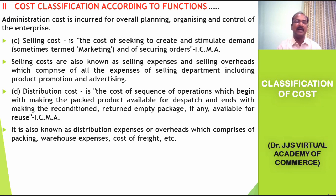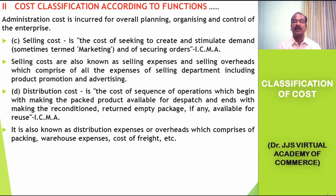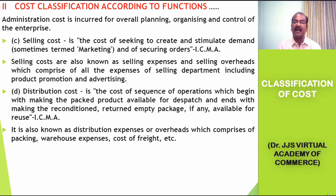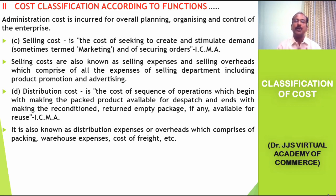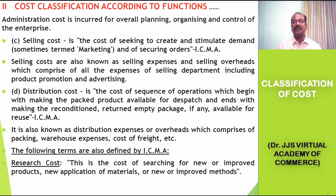The next type of cost is distribution cost. It is the cost of a sequence of operations which begins with making the packed product available for dispatch and ends with making the reconditioned returned empty package, if any, available for reuse, according to ICMA. The expenditure incurred in distributing the product from the point of production to the point of consumption, and expenses incurred to bring back reusable containers and packages, are all distribution cost. It is also known as distribution expenses or overheads, comprising packing, warehouse expenses, storage, freight, etc.